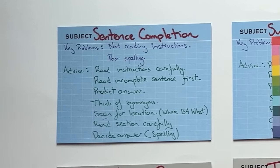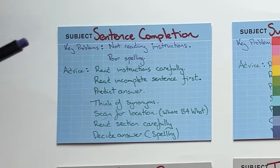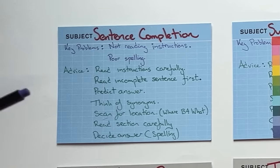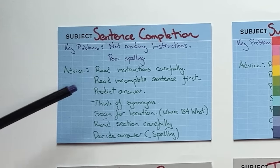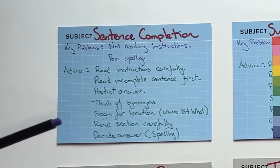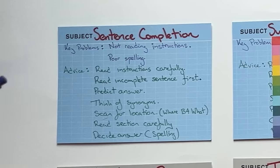My advice for sentence completion: number one, read the instructions carefully. Read the incomplete sentences first — do not read the text first. Read the incomplete sentences to understand them, then predict the answers. Think about what type of words and content are probably going to come up. Even if your predictions are wrong, that doesn't matter, because what you're doing is priming your brain to receive the correct information. Often the exact thing you predicted will come up or something very similar.